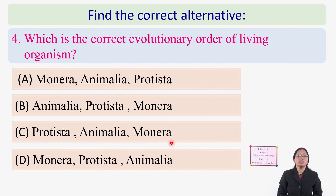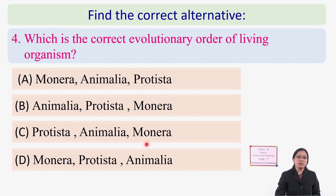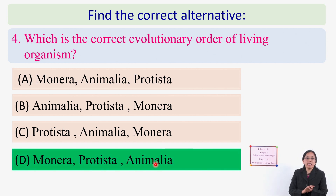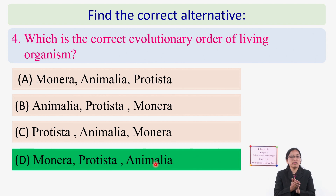Final question: Which is the correct evolutionary order of living organisms? The options include various orderings of Monera, Protista, and Animalia. The correct answer is D: first Monera (most primitive), then Protista (somewhat more developed), then Animalia (most advanced). We have discussed the five kingdom system — how it was classified and some examples. Thank you, students. We will meet in the next class.